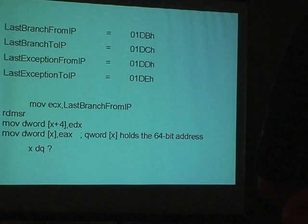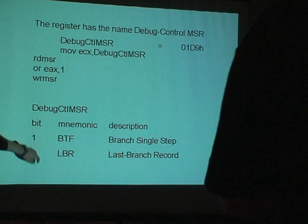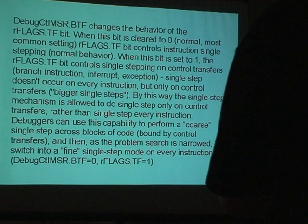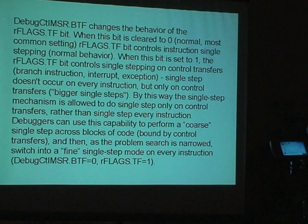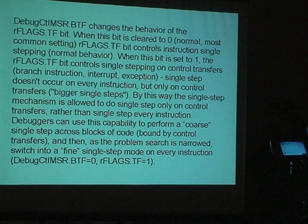When bit one is enabled, it changes the behavior of single stepping. Normal behavior is that single stepping occurs on every instruction. But when we set this bit, single stepping changes — it doesn't occur on every instruction, but only on branches. So we can make bigger single steps, not small ones, stepping only to branches.